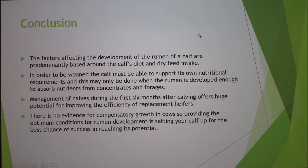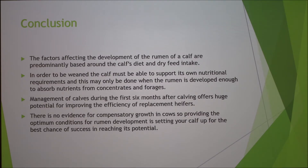The factors affecting the development of the rumen are predominantly based around the calf's diet and dry feed intake. In order to be weaned, the calf must be able to support its own nutritional requirements, and this may only be done when the rumen is developed enough to absorb nutrients from concentrates and forages. Management of calves during the first 6 months after calving offers huge potential for improving the efficiency of replacement heifers in your herd. There is no evidence for compensatory growth in cows, so providing optimum conditions for rumen development is setting your calf up for the best chance of success in reaching its potential.